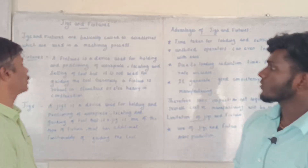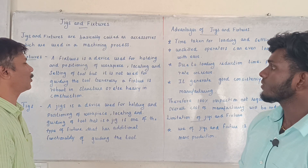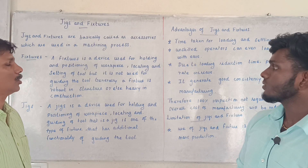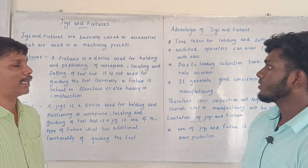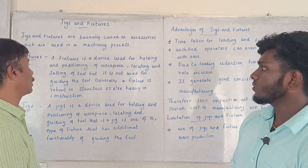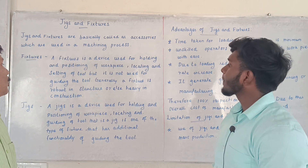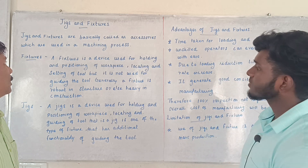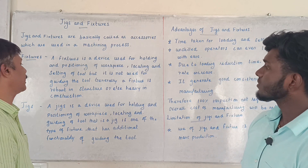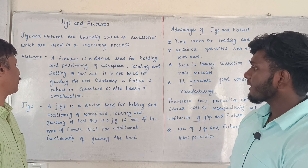So the key points of a fixture are: first, holding and positioning of the workpiece; second, locating and setting of the tool. It is not used for guiding the tool. A fixture is also a robust structure.